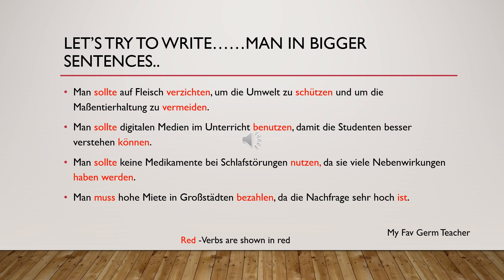'Man sollte auf Fleisch verzichten, um die Umwelt zu schützen, und um die Massentierhaltung zu vermeiden.' So these are sentences with 'um zu'. A person should avoid eating meat to protect the environment and to reduce the mass slaughter of animals.